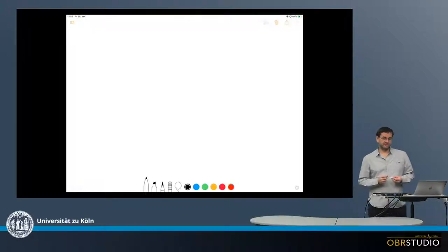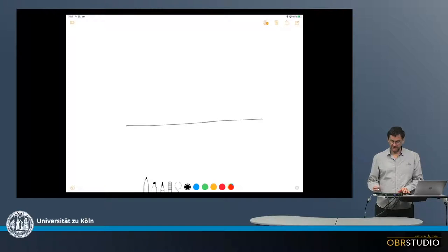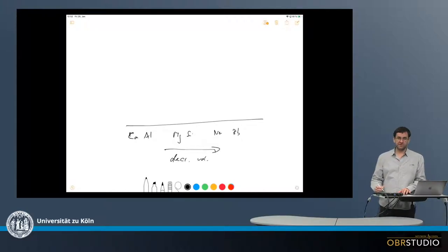A very typical plot is the category plot. In this case we have on the x-axis categories, something like for example calcium, aluminum, magnesium, silicon, sodium, rubidium, and so forth. So in this direction it would be decreasing volatility in this case.